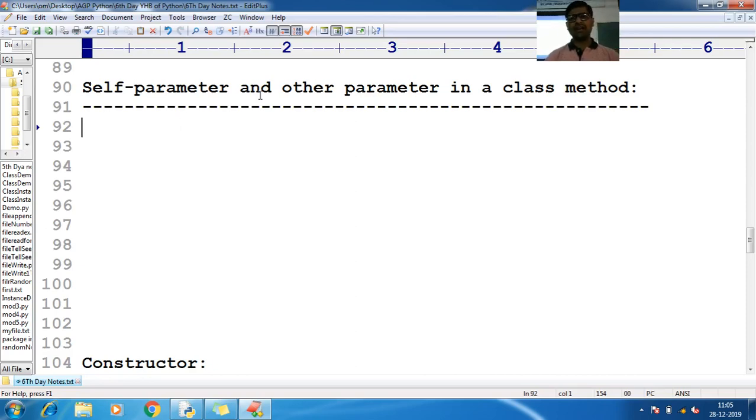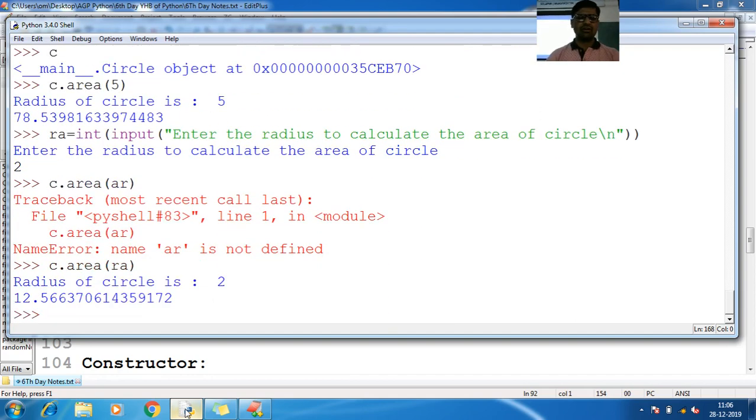Self parameter and other parameters in the class method. So just work it here, class, do it for Rectangle.